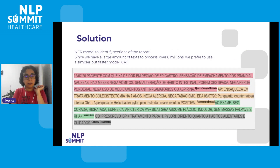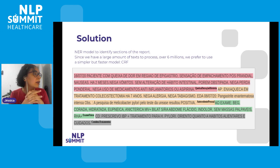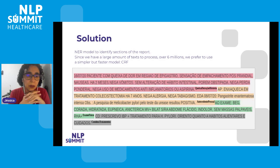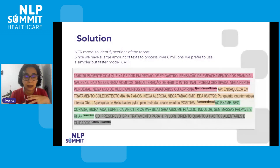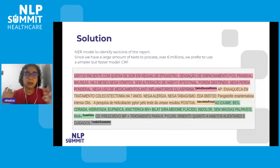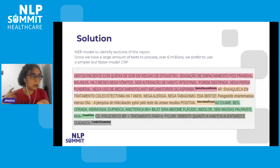For the first phase, we split the EHR into sections. For this, we use a named entity recognition model called CRF, which is small and simpler but very effective and fast. We have a lot of text to process, so this was the most optimized model we found. The most common sections in these texts are history, complaints, comorbidities, diagnosis, treatments, and others.